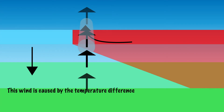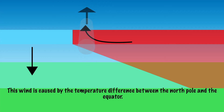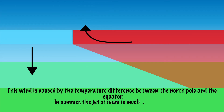This wind is therefore caused by the temperature difference between the north pole and the equator. Because this difference is greatest in the winter months, the wind is also strongest in winter. In summer, the temperature boundary between the warm and cold air is much further north, and so is the jet stream.